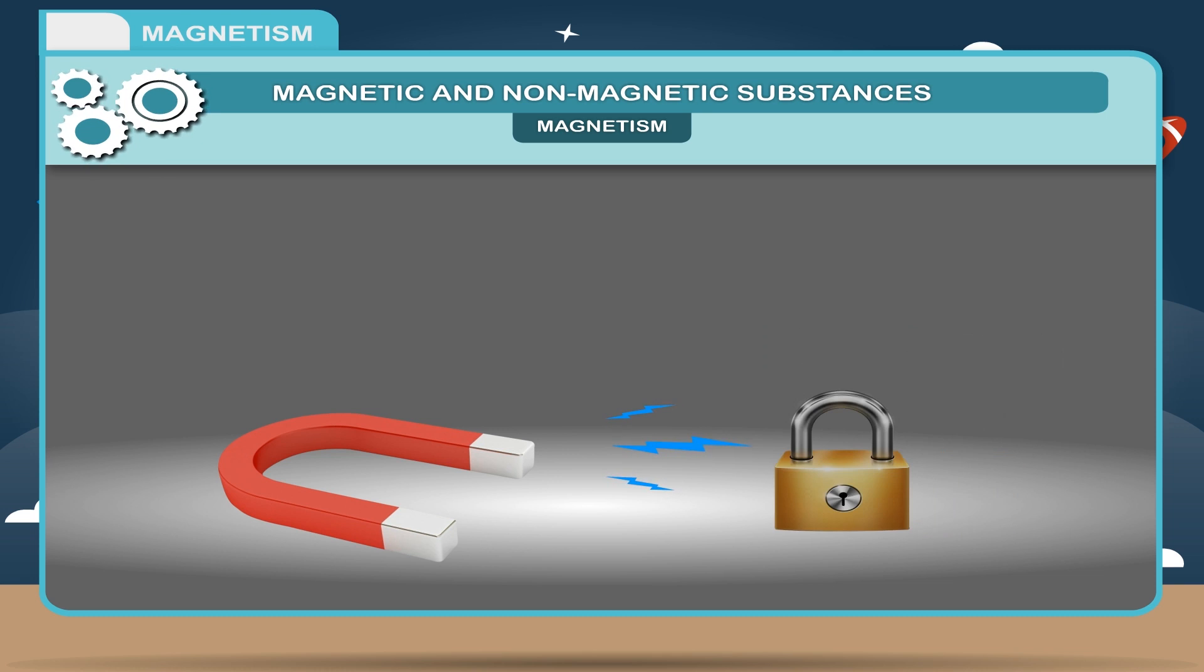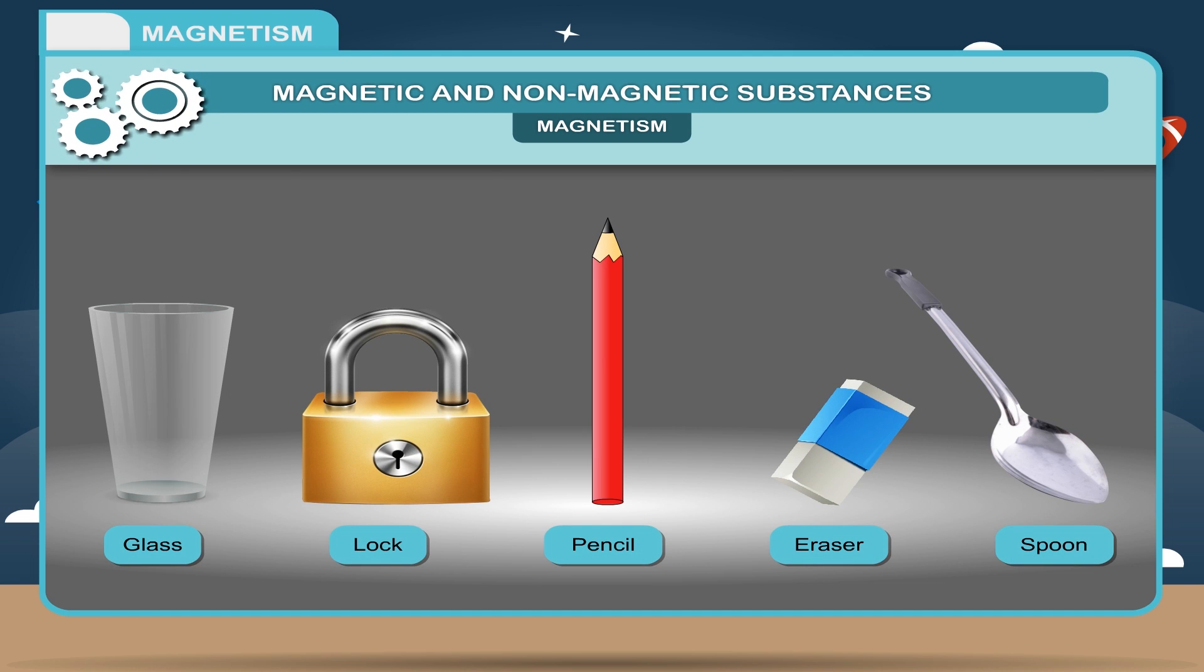You will find that some of these objects are attracted by the magnet while some objects do not show any attraction or repulsion. Make a note of the objects attracted by the magnet and those which are not. Now, you can classify all the objects as magnetic and non-magnetic.